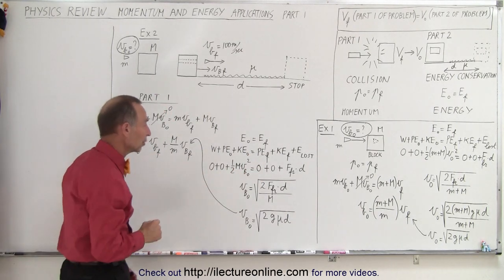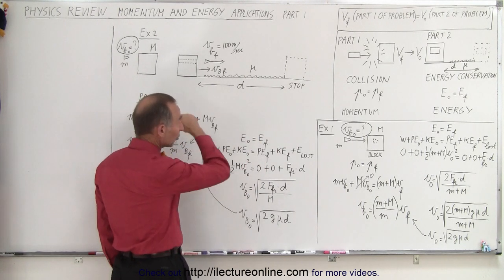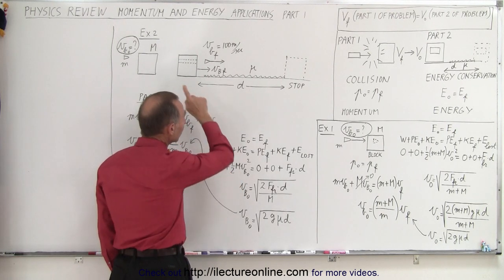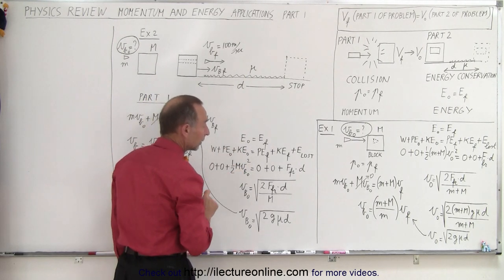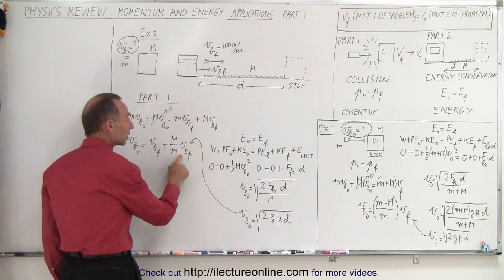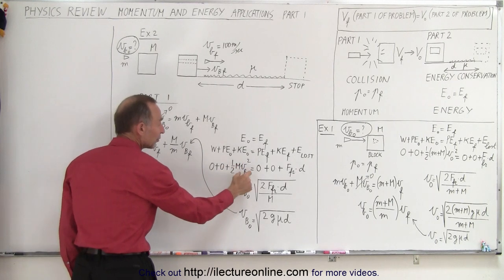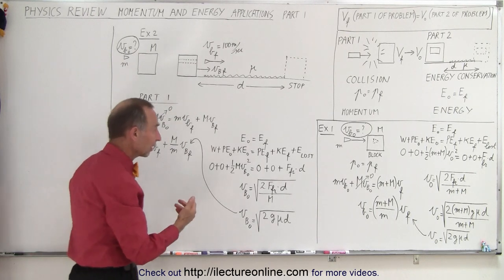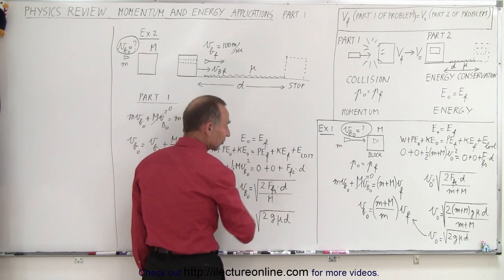We use the energy conservation equation: energy initial equals energy final. There's no work put into the system, no potential energy because there's no height gained. The initial kinetic energy is one-half m times the velocity of the block initial squared — only the block, because the bullet is flying off on its own. Notice that this initial block velocity for part two is the same as the final block velocity after the collision. On the right side: no potential energy, no kinetic energy, and energy lost to friction is friction force times distance.